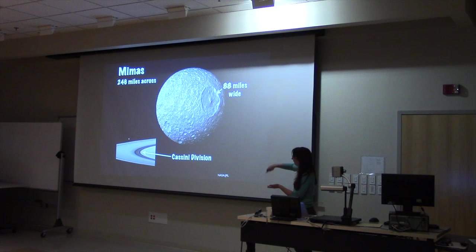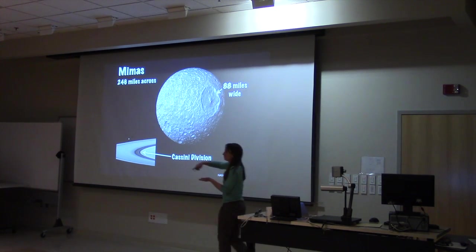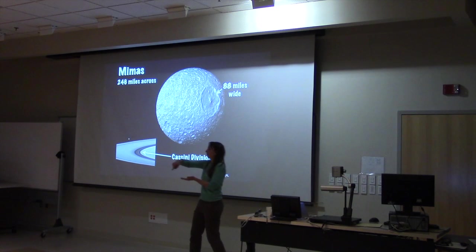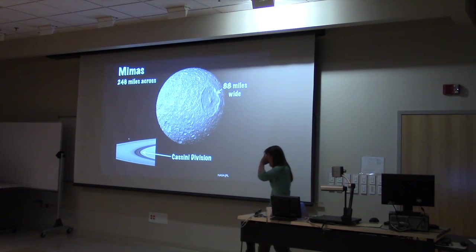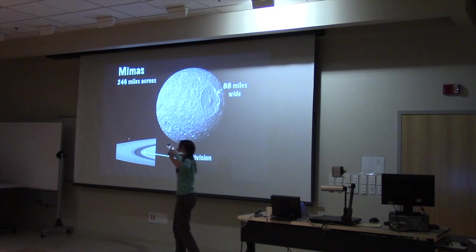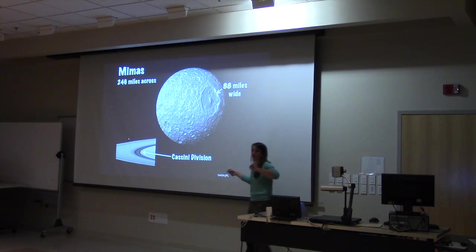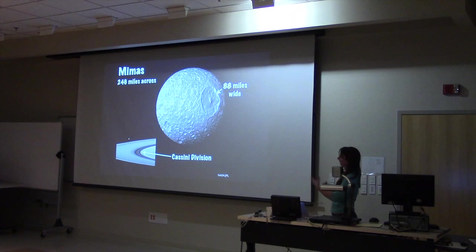And the reason for that is that this part of the rings is in orbital resonance with Mimas. So every time particles at this part of the ring, they go around twice every time Mimas goes around once. So basically Mimas tugs on them with the same period. So if you're pushing a swing, you imagine if you always push it at the right spot, that swing is going to go higher and higher. Mimas with its gravity is basically doing that to particles in this part of the ring.